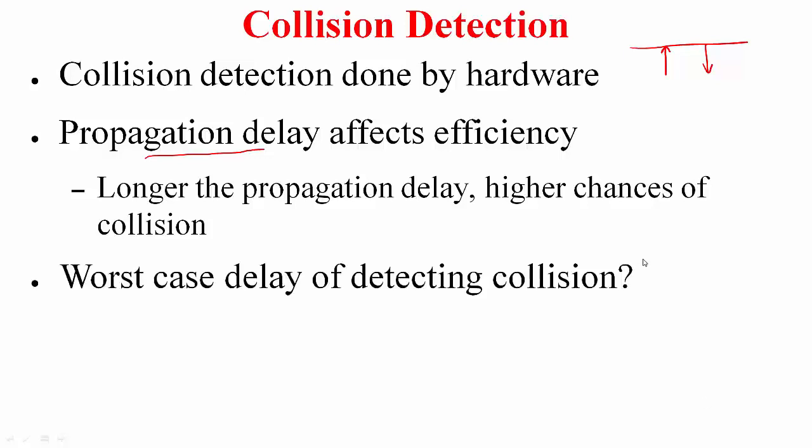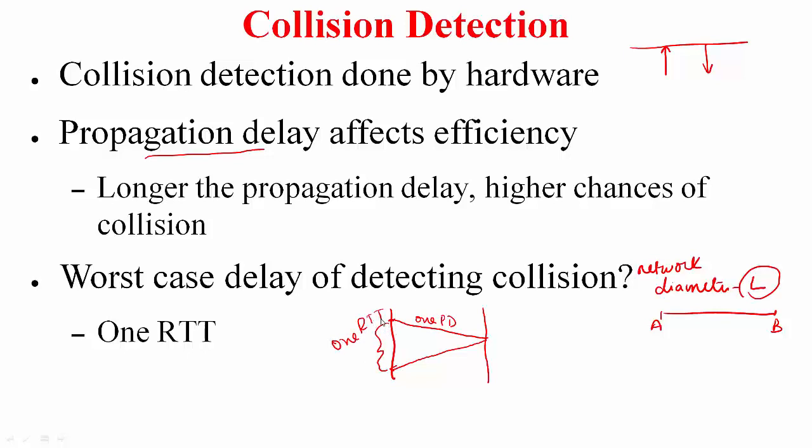If you have a network diameter of length L, that is the maximum distance between any two hosts AB, what is the worst case delay of detecting collision? That is right, one round trip time. For example, A sends the frame, it takes some time for these bits to reach B. This is one way propagation delay. Let us say just before the bits reached B, it sensed that the channel was idle, so B also transmitted. It is going to take some time for these bits to reach A, and this is one round trip time, twice the propagation delay.